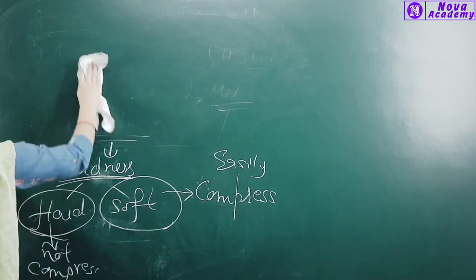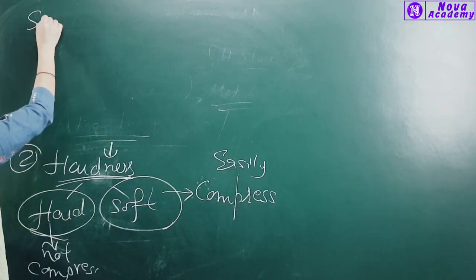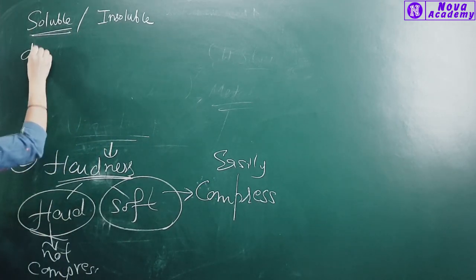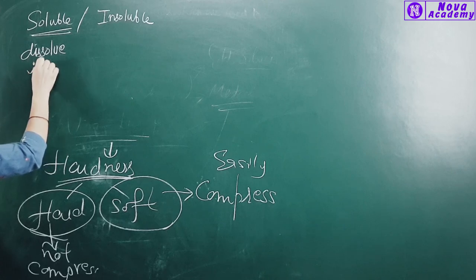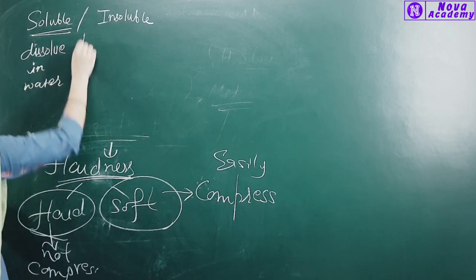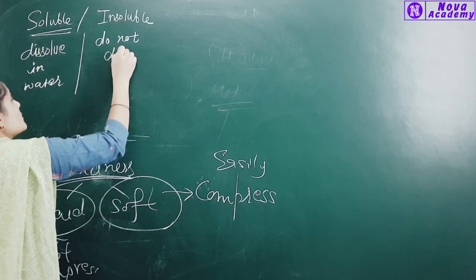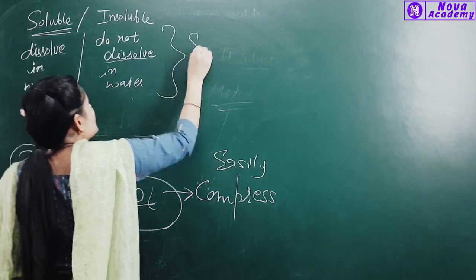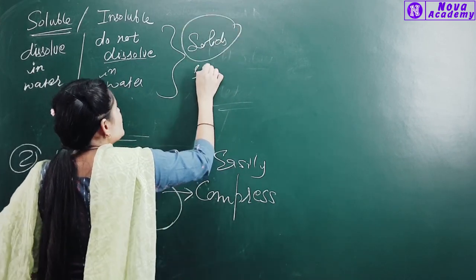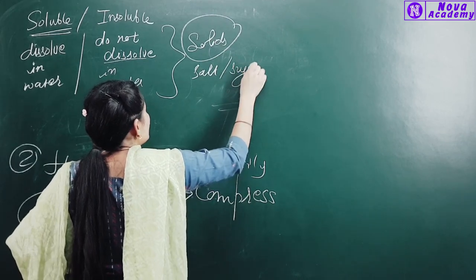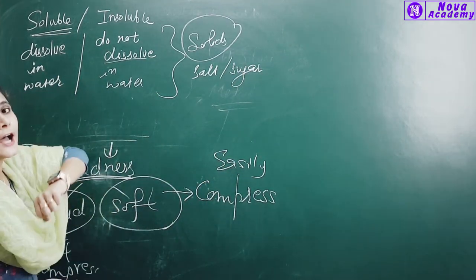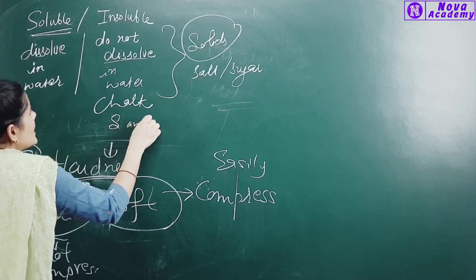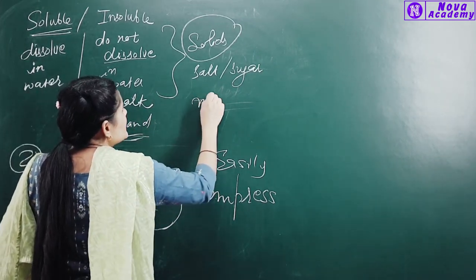After that, it comes to soluble and insoluble. Solids like salt and sugar, if we add them in water, we will see that they are soluble — they dissolve in water. If a solid does not dissolve in water, it is insoluble. Like chalk powder or sand, they will not dissolve. So we have the words soluble and insoluble.